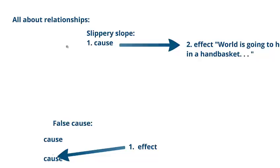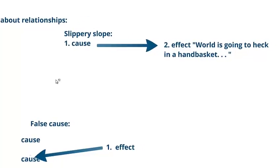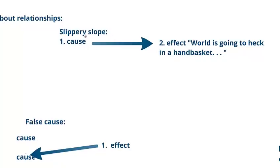The slippery slope goes forward. It says that something will cause something else to happen and that something else will usually be the world falling apart. Slippery slope says if you do something, the effect of it will be that the world will go to hell in a handbasket. And it's usually pretty extreme.